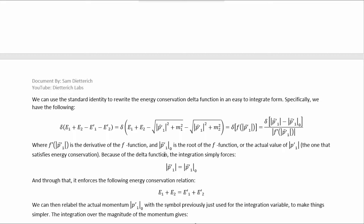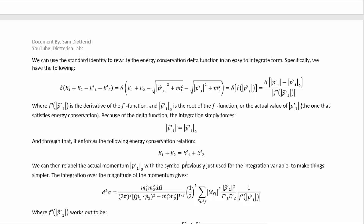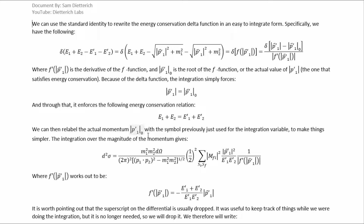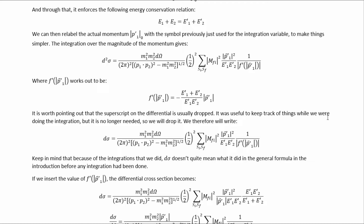We can use the standard identity for rewriting the delta function to rewrite it in terms of F prime, the derivative of the function F, where |P1'|_0 is the root of F — the real value of the momentum magnitude that satisfies energy conservation. Because of the delta function, we have the energy conservation relation imposed. We can then relabel the actual momentum with the symbol we used for the integration variable. Because we finished the integration, this gives us a simplified result. F prime works out to a specific expression. It is worth pointing out that the superscript on the differential is usually dropped now that the integration is complete.